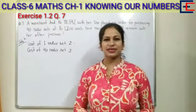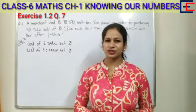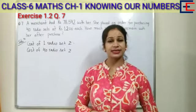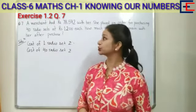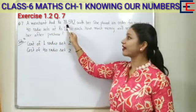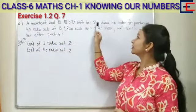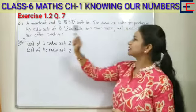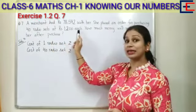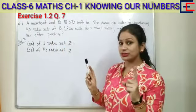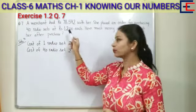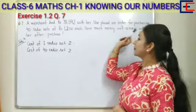Hello viewers, my name is Avantika Sharma, your math tutor. Let's proceed to our today's topic, that is Exercise 1.2, Question Number 7. A merchant had rupees 78,592 with her. She placed an order for purchasing 40 radio sets at rupees 1,200 each — meaning one radio set costs 1,200 rupees. How much money will remain with her after the purchase?